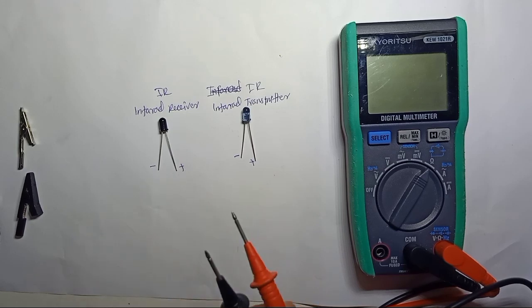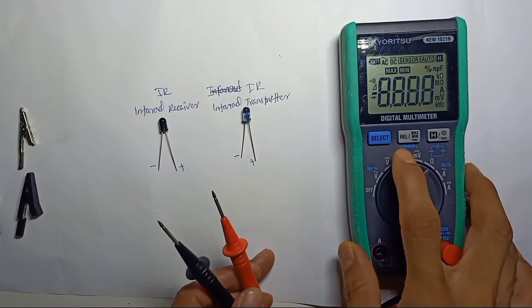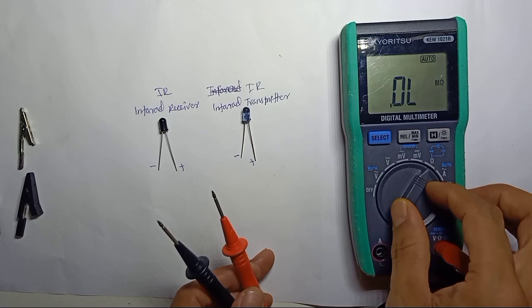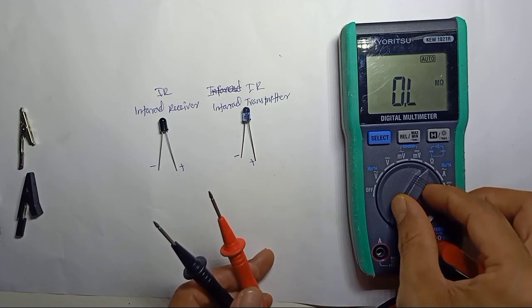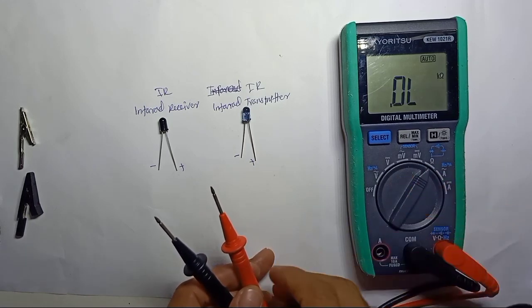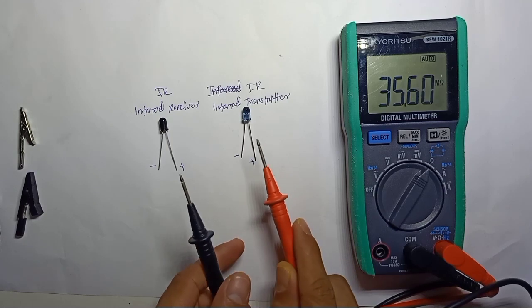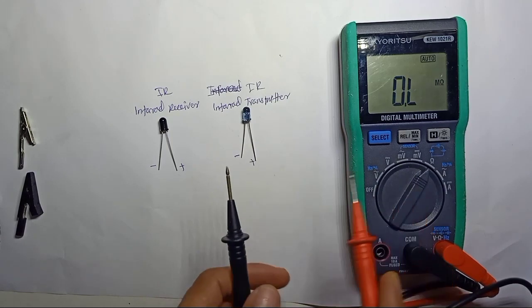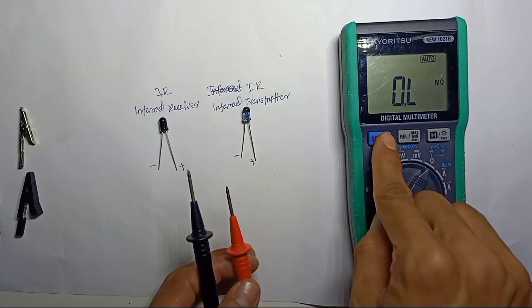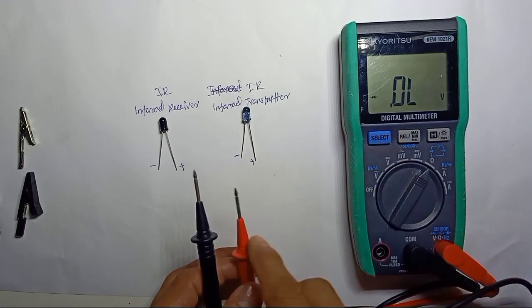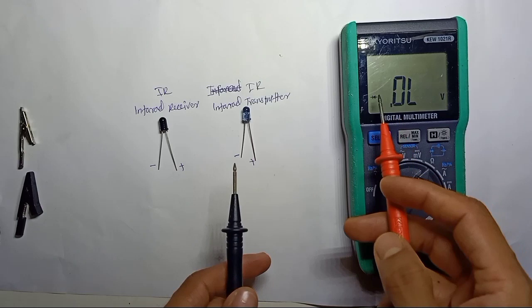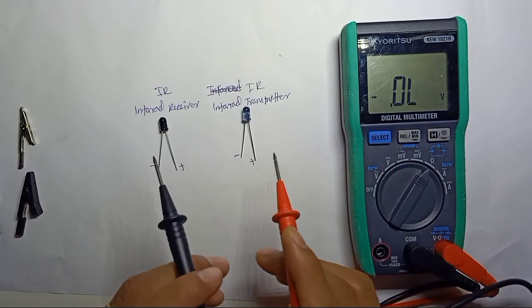We have to use the multimeter set to diode mode. For the transmitter, we have to select diode mode. With any digital multimeter, we select the diode mode for voltage drop measurement.